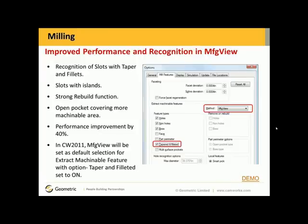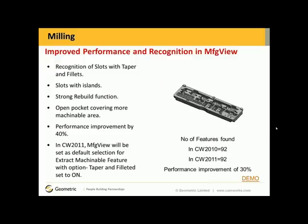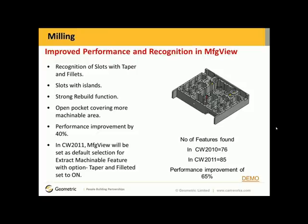With that being said, by default in CamWorks 2011, the Manufacturing View method will be the default selection along with tapered and filleted. Let me give you some examples. In CamWorks 2010, no features were found by Automatic Feature Recognition, commonly known as AFR. And in Manufacturing View, 92 features were found. In CamWorks 2011, 92 features were found; however, the performance improvement was 30% on this particular part.